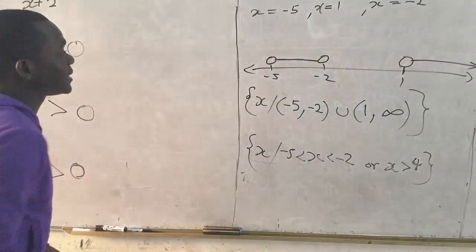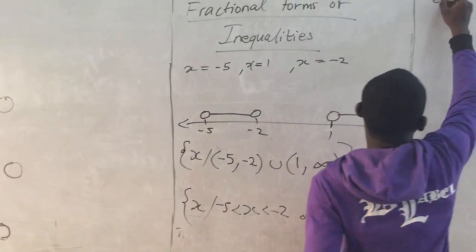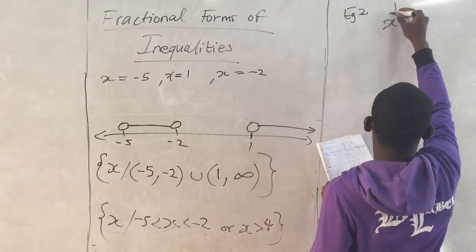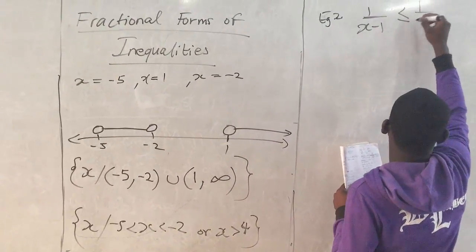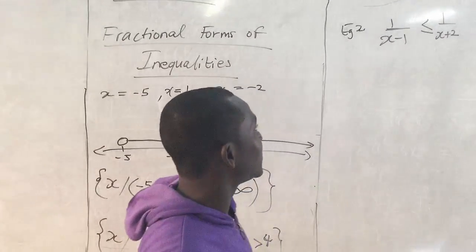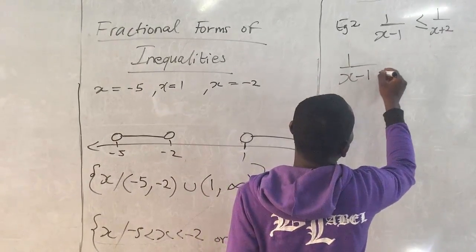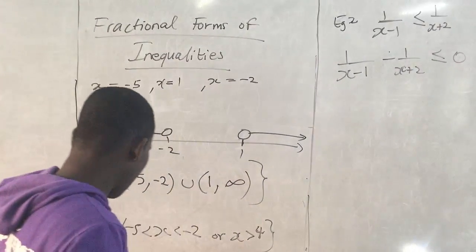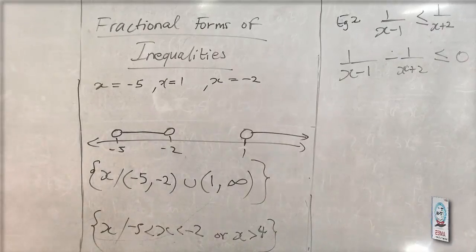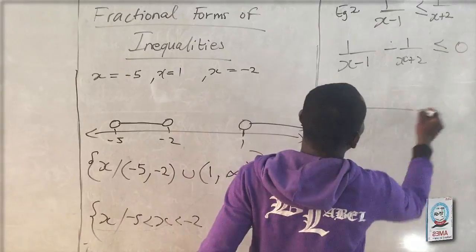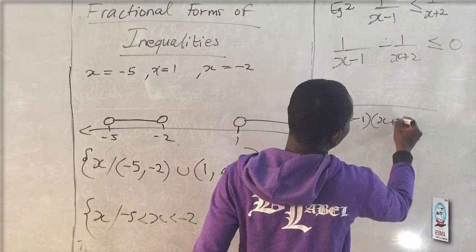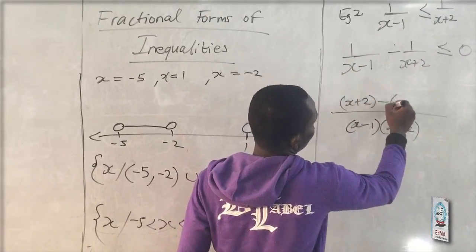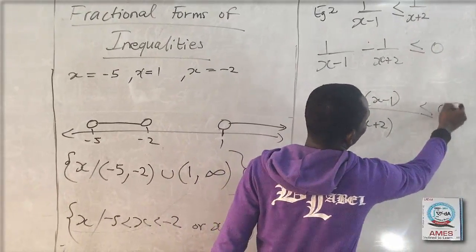Let's take one more example to master this concept. Example 2: we have 1 over (x minus 1) less than or equal to 1 over (x plus 2). The first step is to keep all expressions on the left-hand side. We bring everything over and find the LCM, which is (x minus 1)(x plus 2). Simplifying gives us (x plus 2) minus (x minus 1) over (x minus 1)(x plus 2), which simplifies to 3 over (x minus 1)(x plus 2), less than or equal to zero.